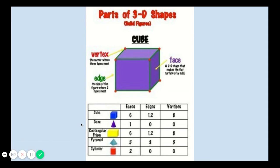A rectangular prism, similar to a cube, has six faces, twelve edges, and eight vertices. A pyramid has five faces, eight edges, and five vertices.